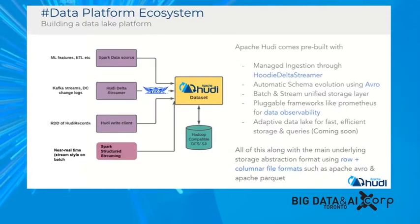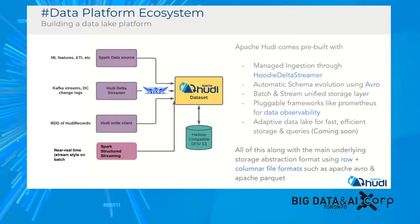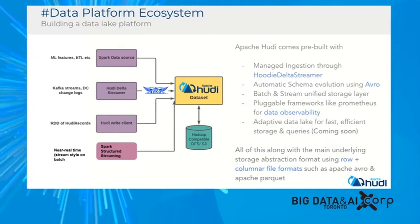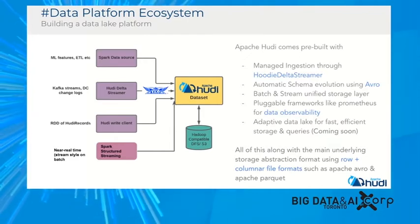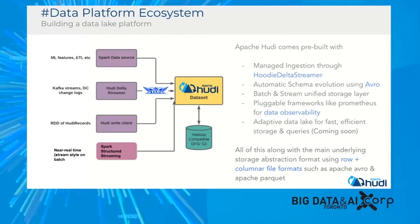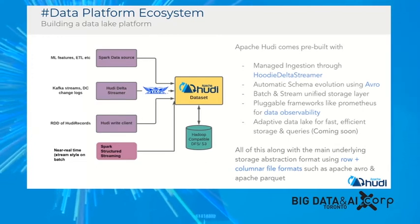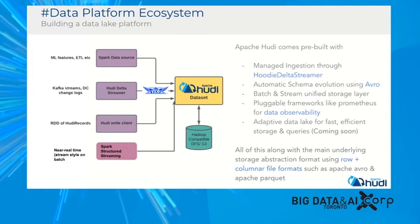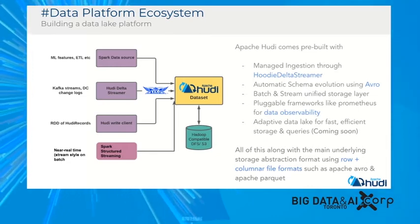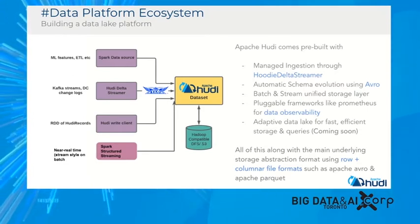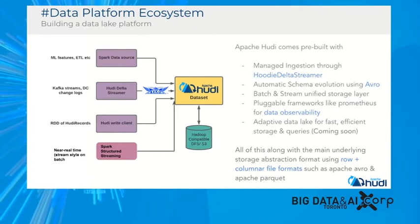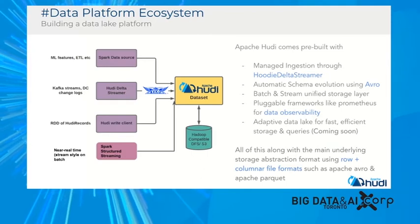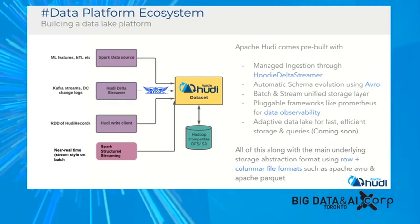Summing it all together, a data lake platform ecosystem uses Apache Hudi as the storage abstraction, addressing all the platform requirements discussed. Apache Hudi comes pre-built with a managed ingestion framework through Delta Streamer. You can do automatic schema evolution using Avro rules, with pluggable Avro schema evolution strategies. Hudi sits between batch and stream with a unified storage layer serving latencies of less than five minutes. It provides pluggable observability frameworks like Prometheus, Graphite, and Datadog. We're working on an adaptive data lake for efficient storage that learns from query analysis, using row and columnar formats like Avro and Parquet to provide strong columnar read performance while keeping ingestion latencies low.